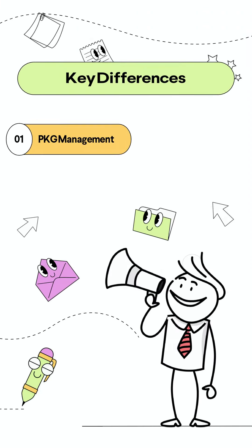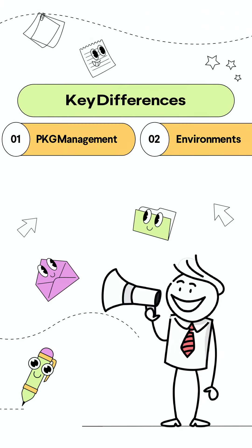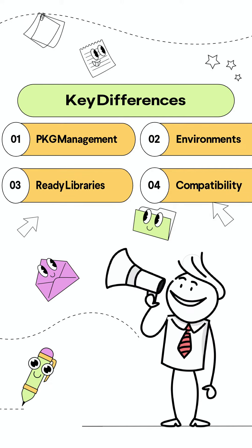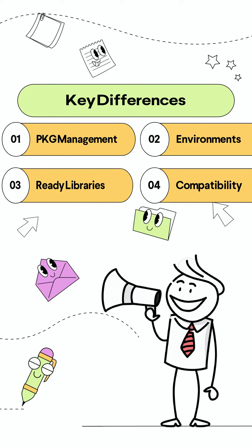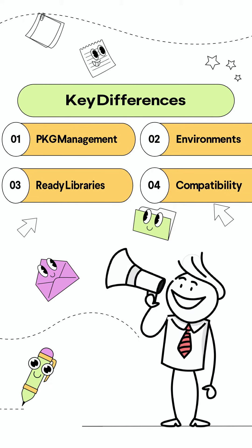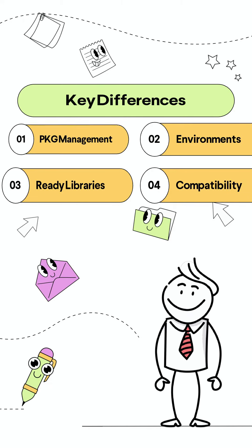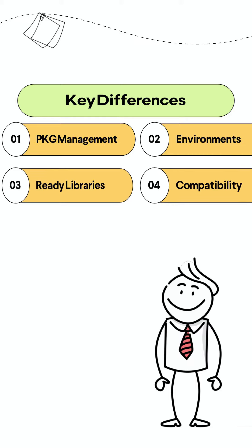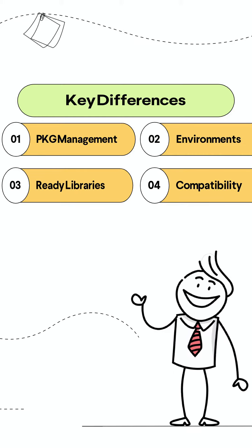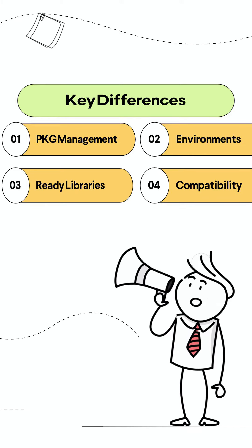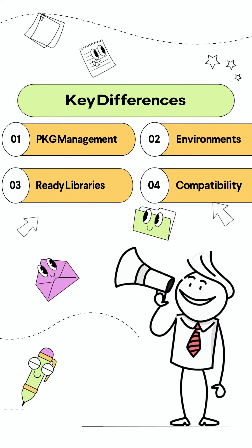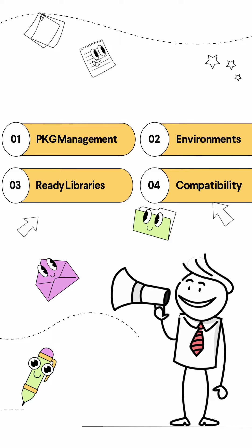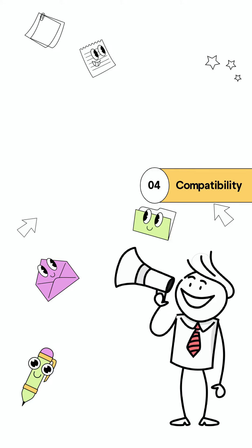Key differences include package management, which is easy with Anaconda's Conda. Anaconda's environment management creates isolated environments. Ready-to-use libraries in Anaconda save time, and its cross-platform compatibility ensures consistency across different operating systems.